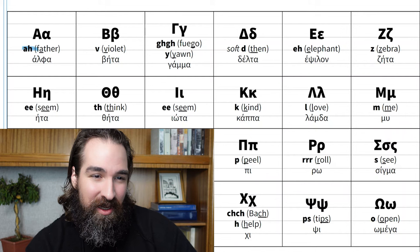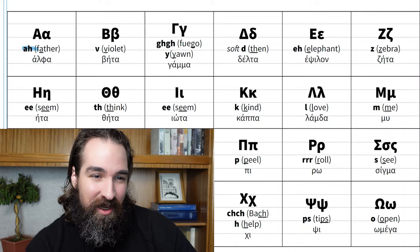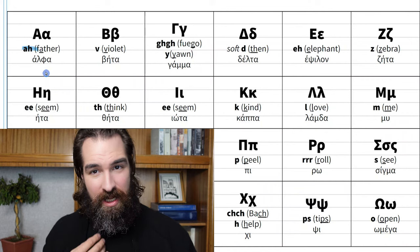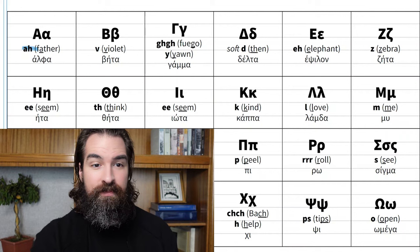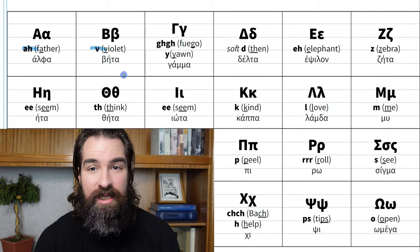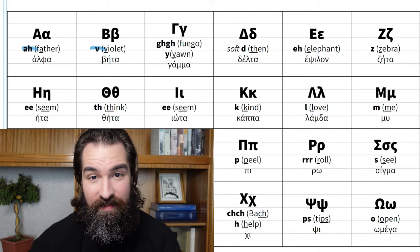Alpha looks like an A and makes a long A sound — 'ah' like in the word 'father.' Say it with me: 'ah,' alpha. Then we have vita. Vita looks like a B but sounds like a V, like in the word 'violet.'